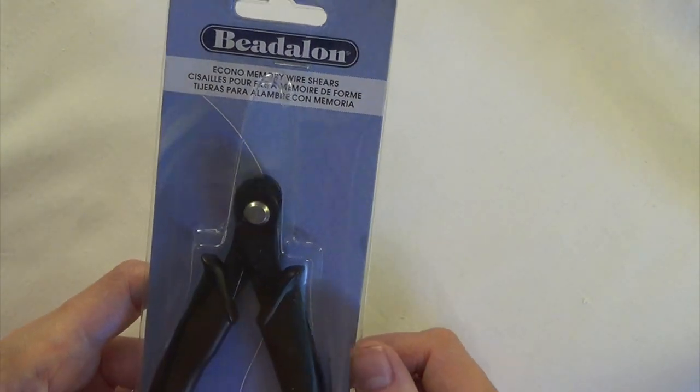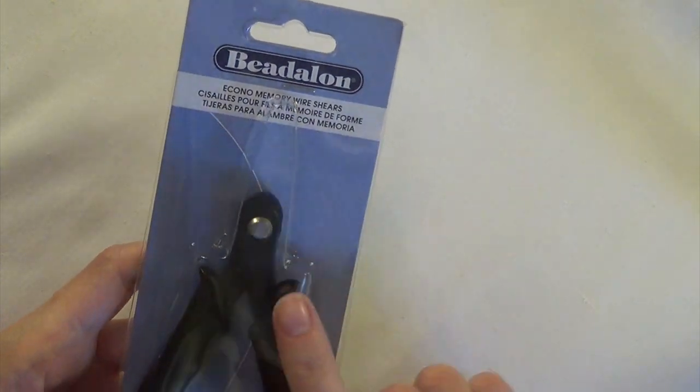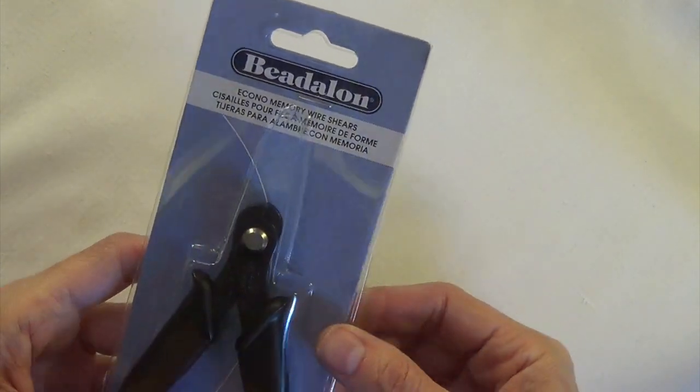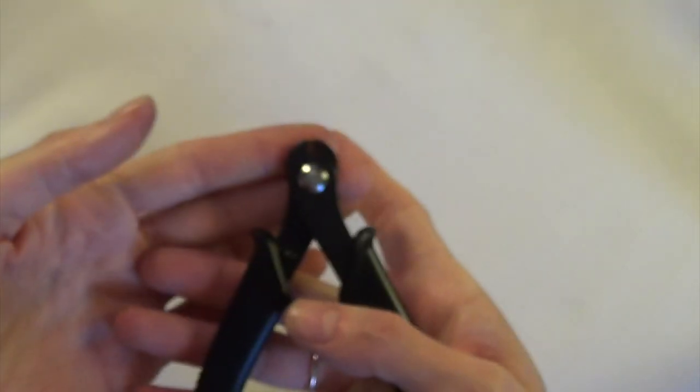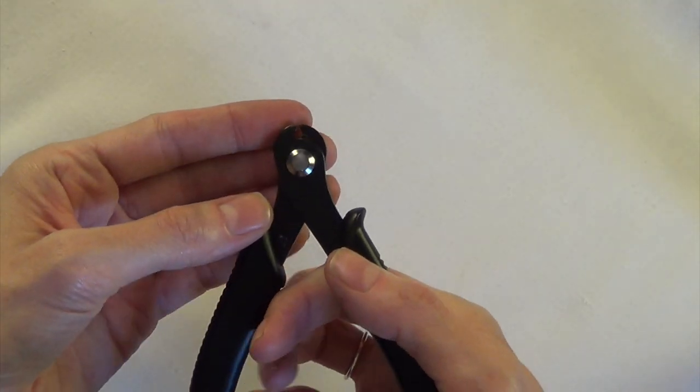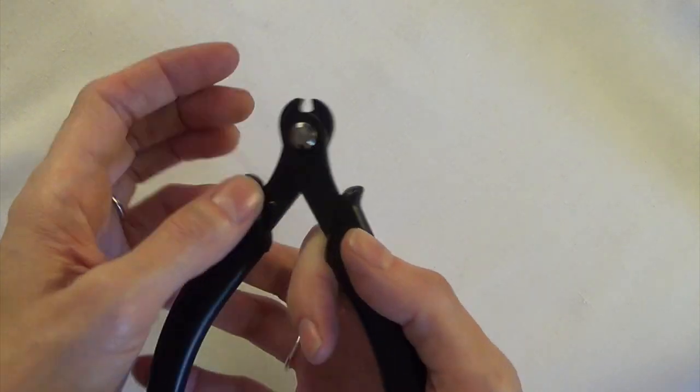Very important when you're working with memory wire you always want to use tools that are specifically for cutting memory wire so you don't ruin your good wire cutters. These are memory wire shears made for cutting steel which is a lot harder than many other jewelry wire materials that you might be used to working with.